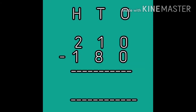We will arrange these numbers under the columns of ones, tens, and hundreds. For 210: zero is placed at the ones place, one at the tens place, and two at the hundreds place. For 180: zero is placed at the ones place, eight at the tens place, and one at the hundreds place. Now we will start subtracting from the ones digit: zero minus zero is equal to zero.